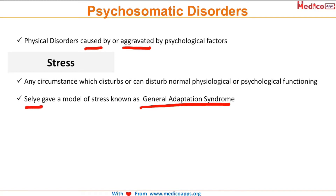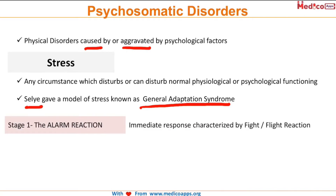The General Adaptation Syndrome describes how our body reacts to stress in three stages. The first stage is the alarm reaction, which is characterized by the fight or flight reaction.